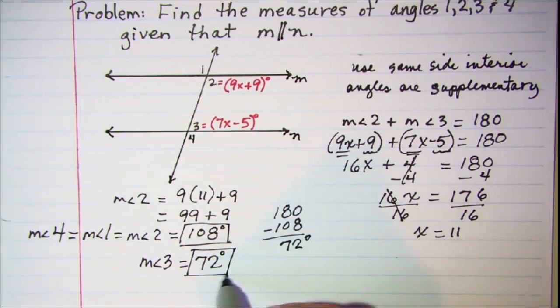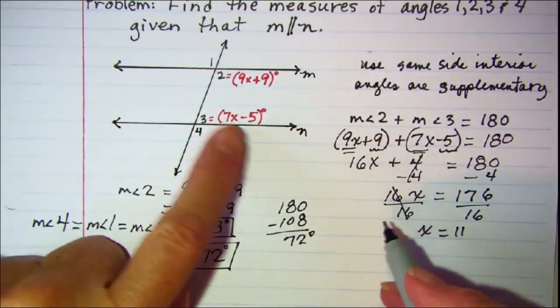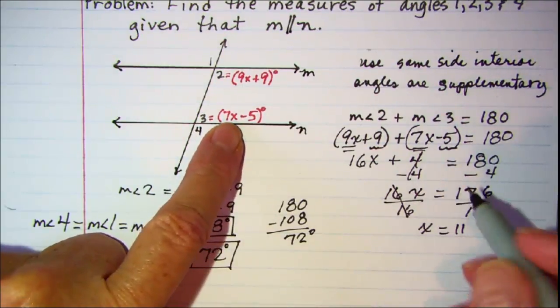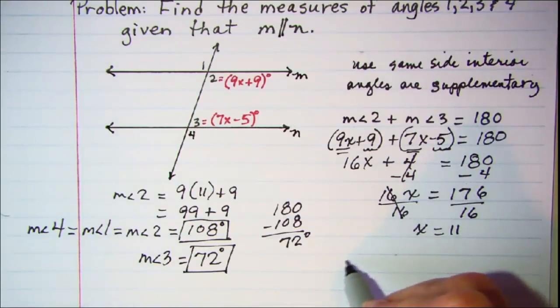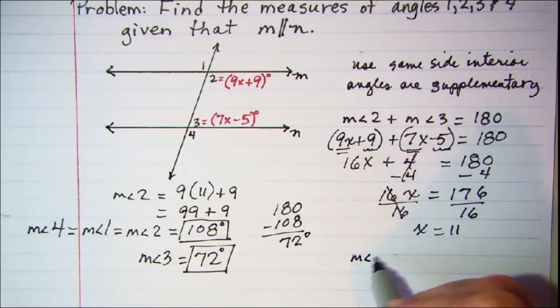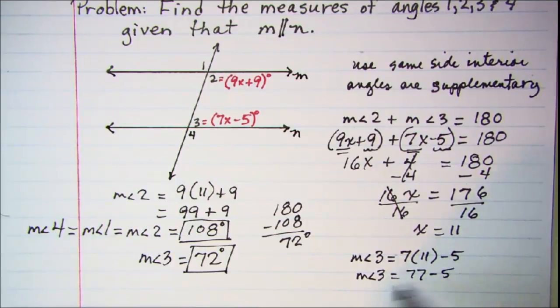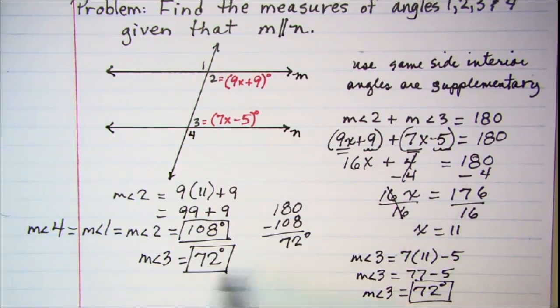Now if you had thought, let's substitute 11 for this expression, we could have done that and got measure of angle 3 equals 7 times 11 minus 5, so measure of angle 3 is 77 minus 5, angle 3 is 72. So either way we get the same answer.